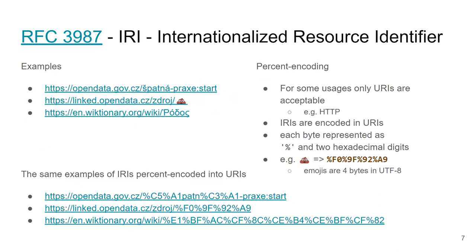There is a problem with IRIs: the HTTP protocol is based on US-ASCII URIs, but RDF is based on IRIs, so we are encouraged to use Unicode identifiers. However, the third principle of linked data says we should return data when someone dereferences an IRI using HTTP. The solution is percent-encoding: we take the Unicode IRI and encode it into an ASCII URI by representing each byte as a percent sign followed by its hexadecimal value.